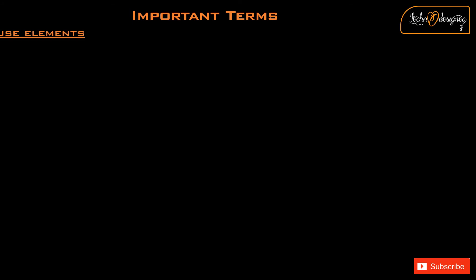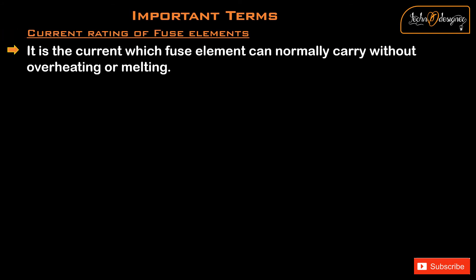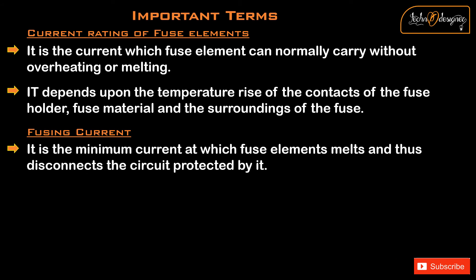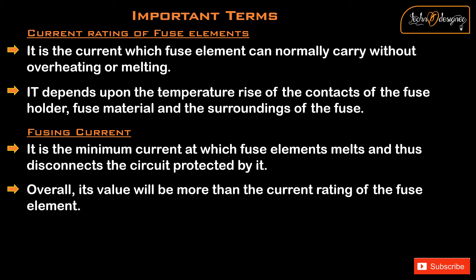Important Terms. Current Rating of Fuse Elements: it is the current which a fuse element can normally carry without overheating or melting. It depends upon the temperature rise of the contacts of the fuse holder, the fuse material, and the surroundings of the fuse. Fusing Current: it is the minimum current at which the fuse element melts and thus disconnects the circuit protected by it. Overall, its value will be more than the current rating of the fuse element.